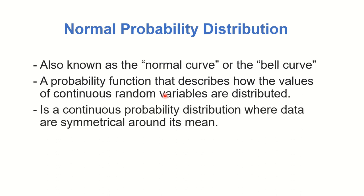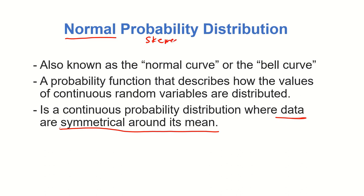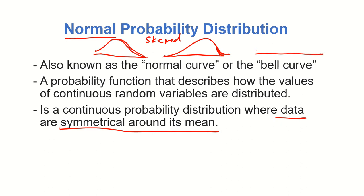Normal probability distribution is a continuous probability distribution where data are symmetrical around its mean. Data must be symmetrical around its mean because there are some continuous probability distributions that are not symmetrical — for example, the graph can be skewed to the right or skewed to the left. That is not a normal probability distribution. When we say normal probability distribution, the data must be evenly distributed around its mean.